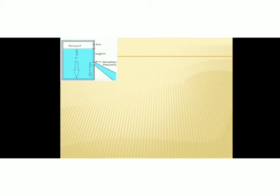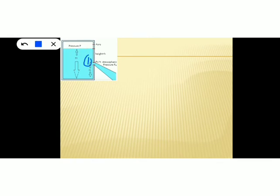We will prove Torricelli's law with the help of a figure showing a water tank. Consider a tank containing a liquid of density rho with a small hole on its side. Let Y1 be the height of the hole and Y2 be the height of the water surface in the tank. The region near the hole is considered region 1 and the top surface of the water is region 2. Now apply Bernoulli's equation on regions 1 and 2.